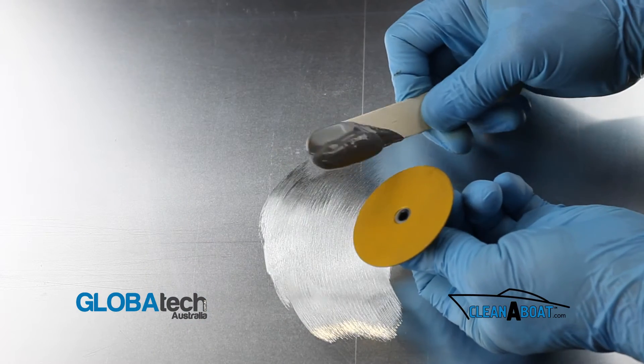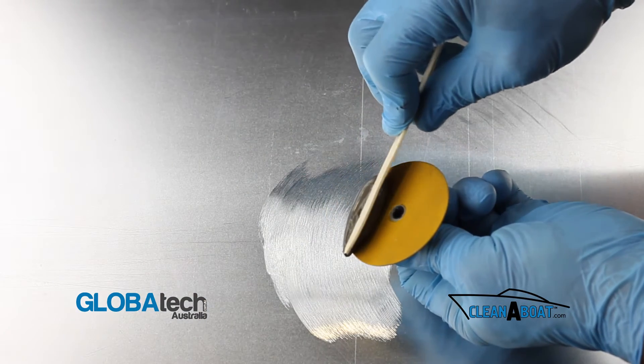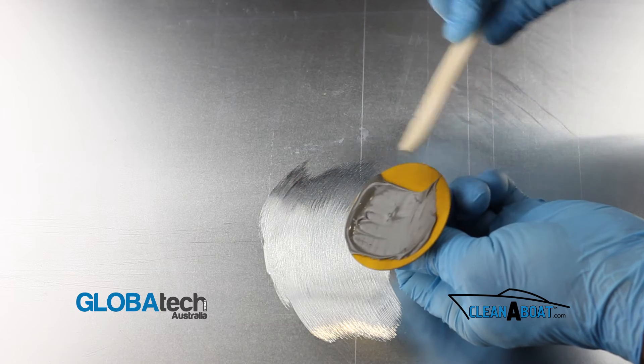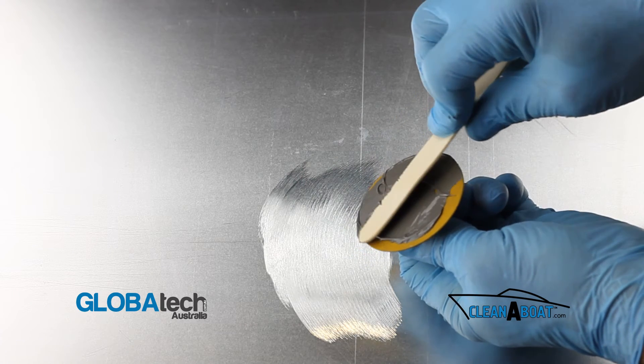Apply large amounts of the mixed JB Weld onto the base of the footprint, ensuring that there are no air pockets.